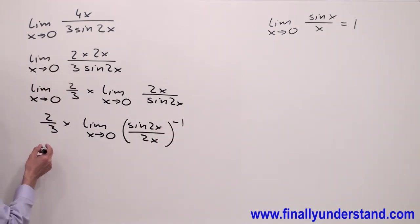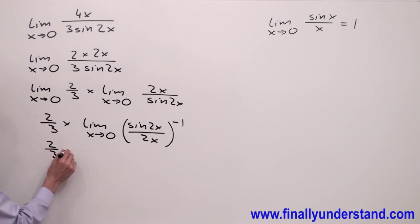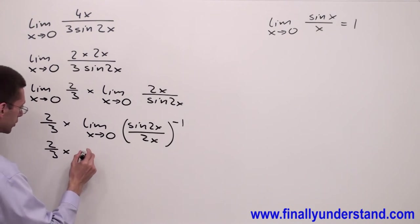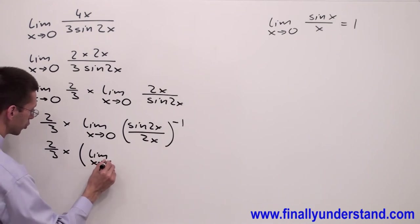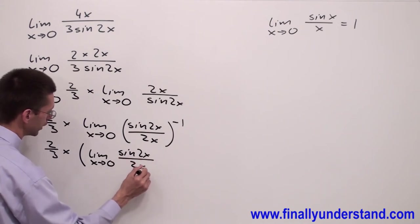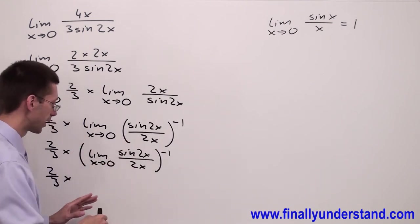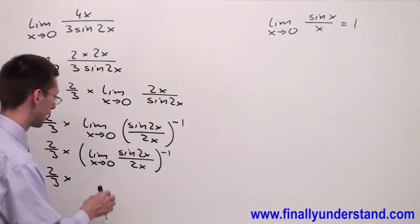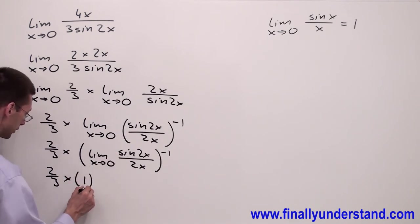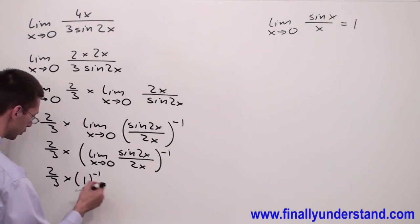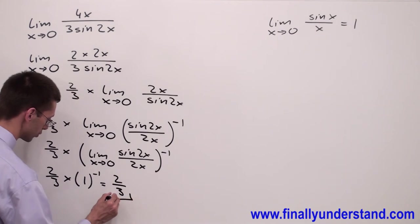I copy down everything I didn't use: 2/3 times. I write this expression and simply write this as limit x approaching 0, and I have sin 2x over 2x to the power negative 1. For limits, we can bring the limit inside the parenthesis. The content of the parenthesis, according to this fundamental theorem, is going to approach 1. So I write 1 inside the parenthesis to the power negative 1. 2/3 times 1 to the power negative 1 equals 1, so the answer is 2/3. This is the solution to my problem.